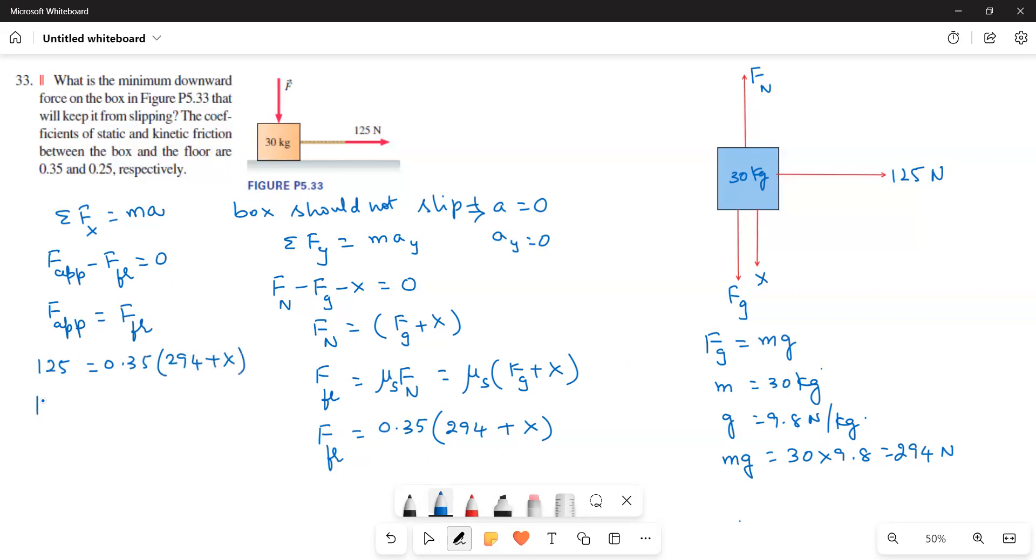Therefore, 125 divided by 0.35 is equal to 294 plus X. Or X is equal to 125 divided by 0.35 minus 294. Therefore, X is equal to 63.14 Newtons.